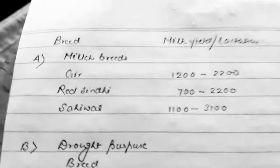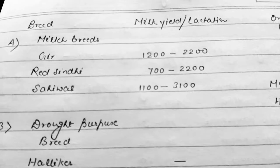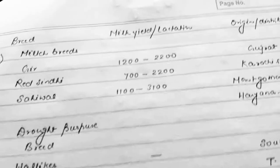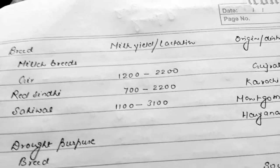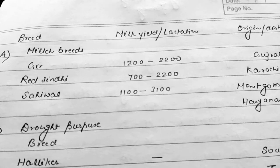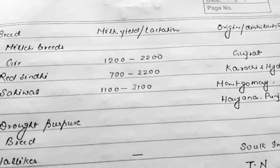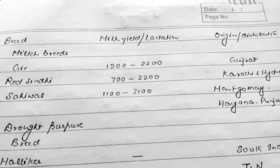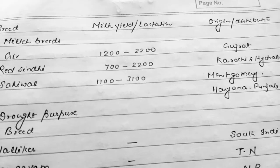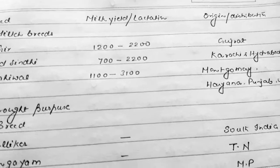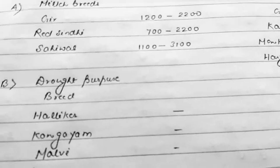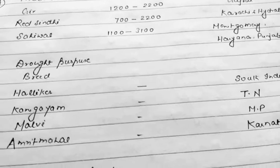Further classifying cattle breeds by purpose, there are four categories: milch breed, drought purpose, dual purpose, and exotic breed. Milch breeds are those mainly reared for milk production. Three milch breeds commonly found in India are Gir, Rathi, and Sahiwal. Gir is commonly distributed in Gujarat, Rathi in Karachi and Hyderabad, and Sahiwal in Montgomery, Haryana, and Punjab. Drought purpose breeds commonly used in India include Hallikar, used in south India.